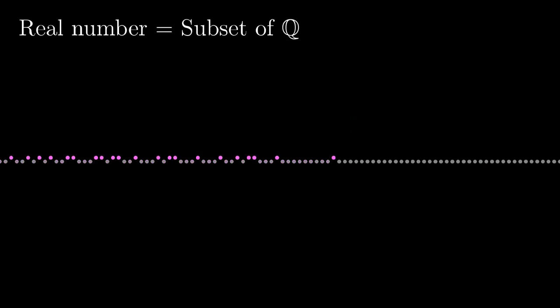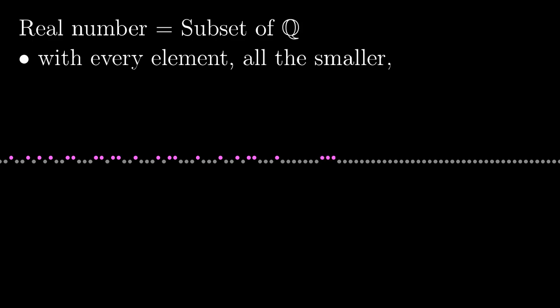It is a subset of rational numbers. By the way, the set of rationals is usually denoted as Q, quotients. Which, with every element, contains all the lower numbers. In other words, it must be an initial segment.